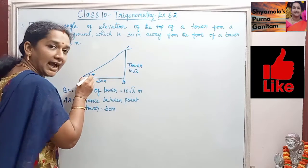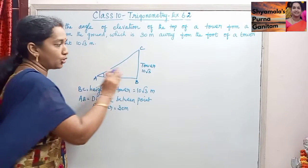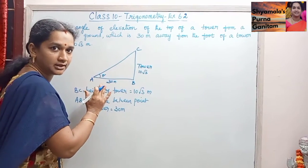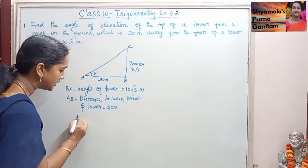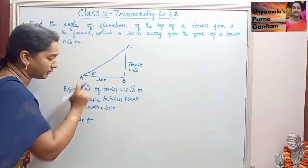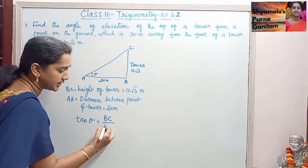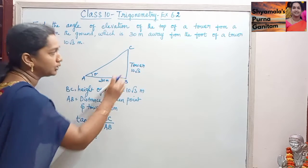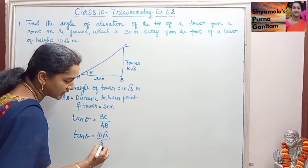Since the opposite side value and the adjacent side value are given, we will take the ratio as tan. So tan theta, since we do not know the angle, we are going to find that angle only — we will take it as theta. So tan theta is equal to opposite, that is BC, divided by adjacent, that is AB. So tan theta equals 10 root 3 divided by 30.